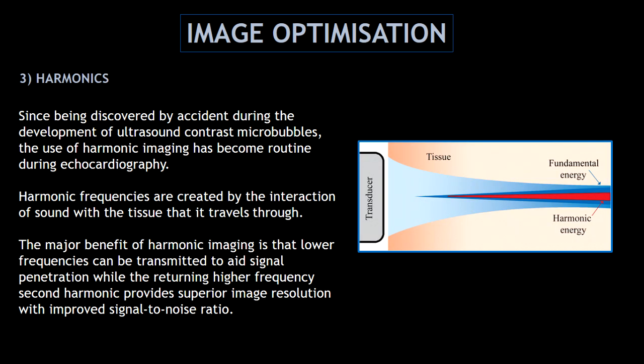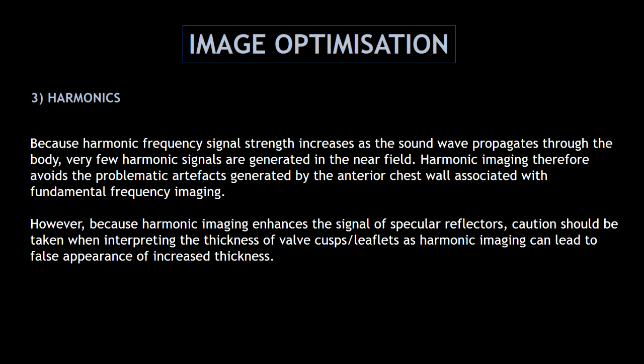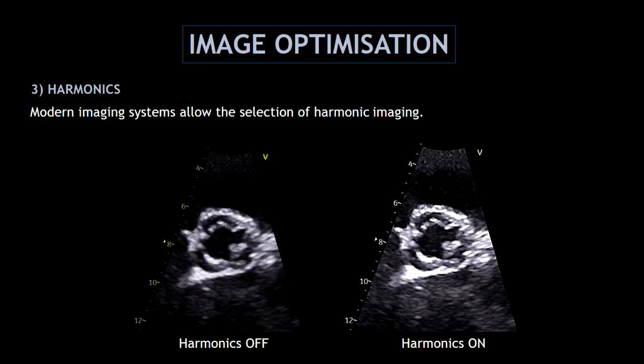Another important feature is harmonics. The harmonics were discovered by accident during the development of contrast ultrasound, and the use of harmonic imaging has become routine during echocardiography. The benefit of harmonics is that it provides superior image resolution, even with lower frequencies. Because harmonic imaging enhances the signal, caution should be taken when interpreting the thickness of the leaflets, as harmonic imaging can lead to a false appearance of increased thickness. The image on the right side is brighter and appears thicker — this is why we have to be careful when interpreting the valves if the harmonics are on.